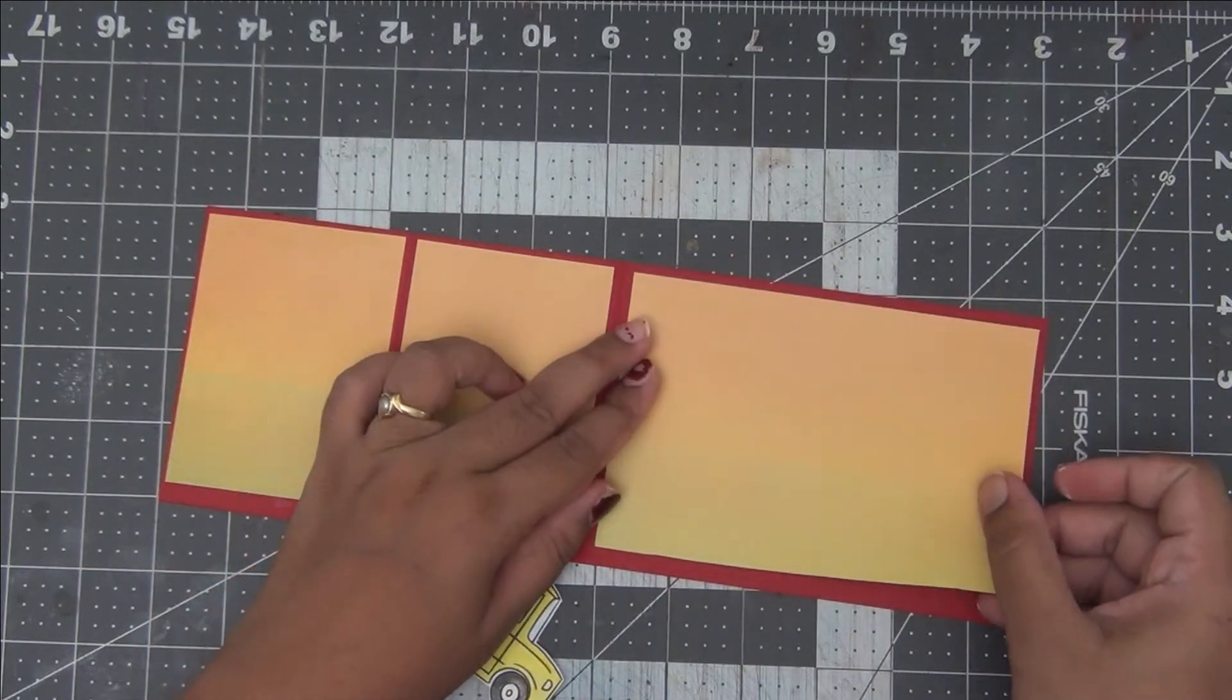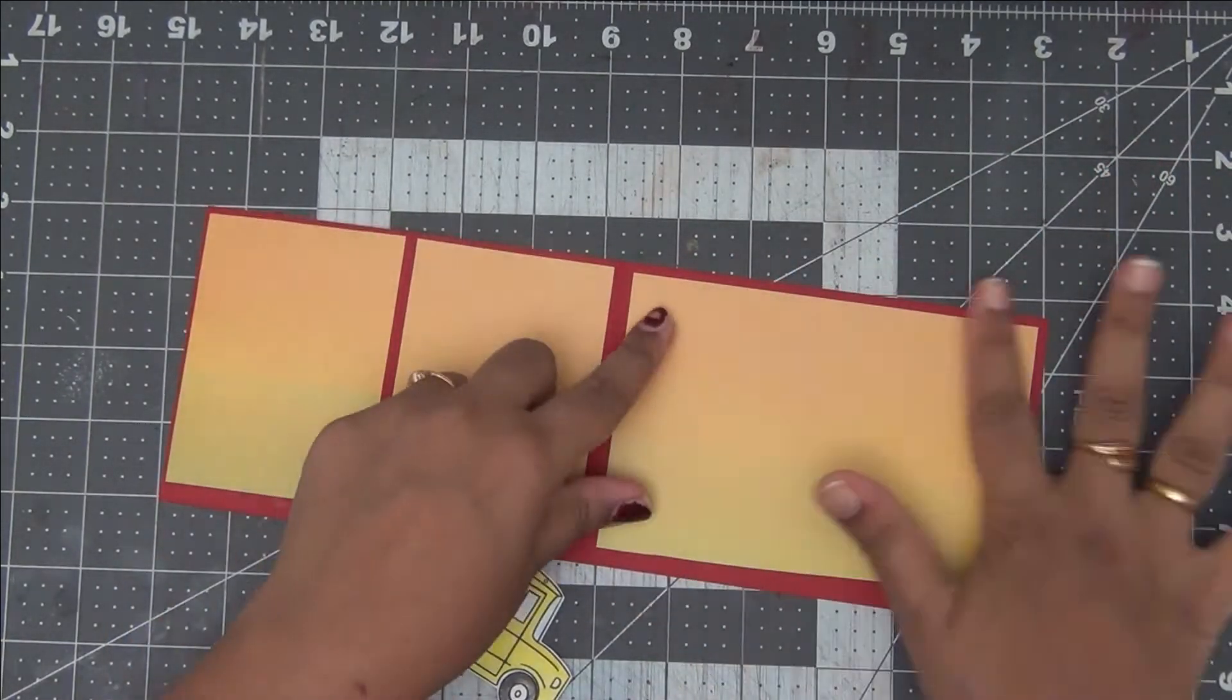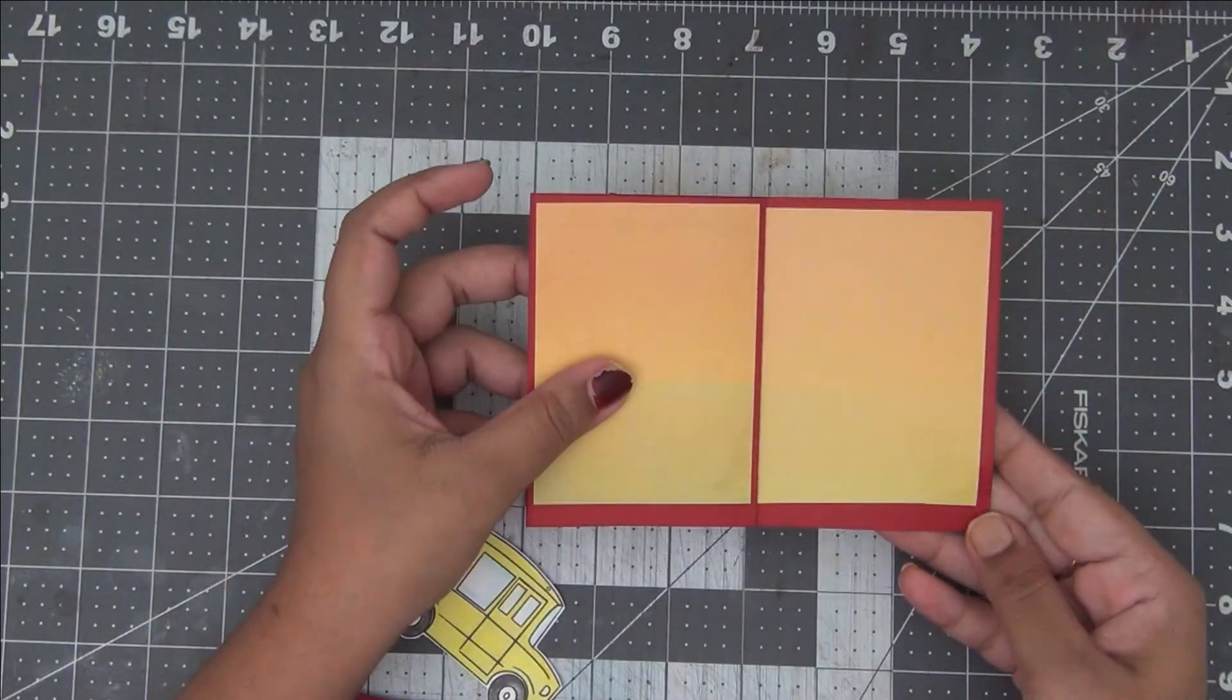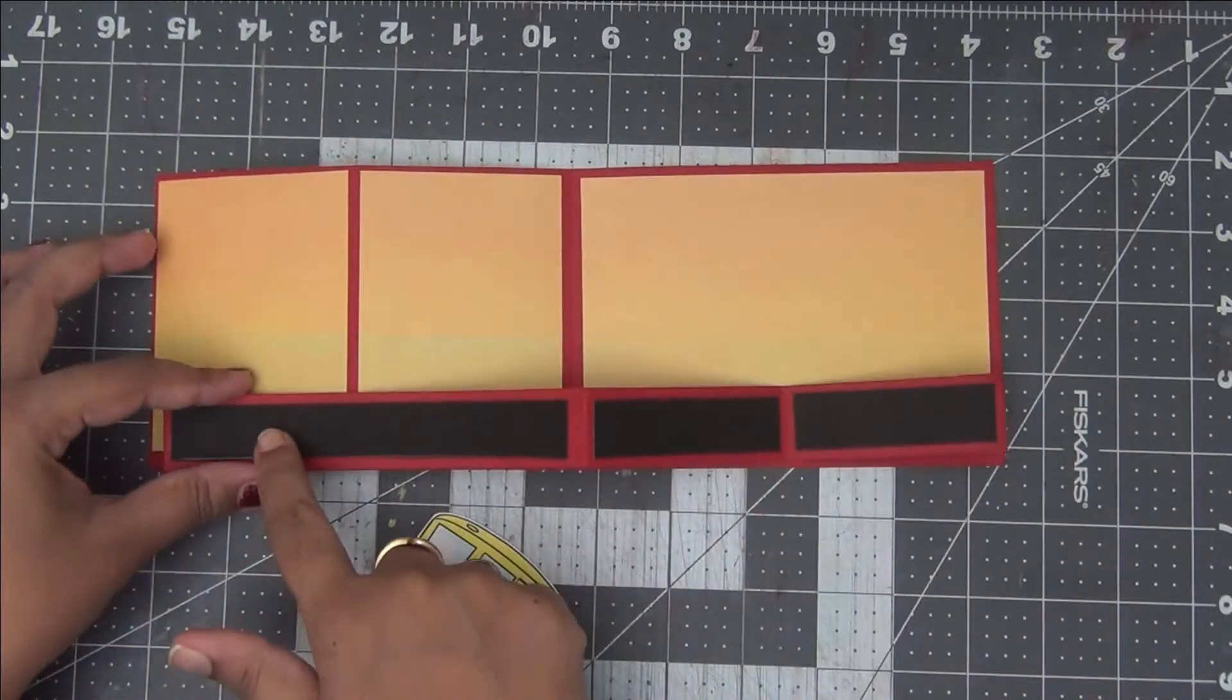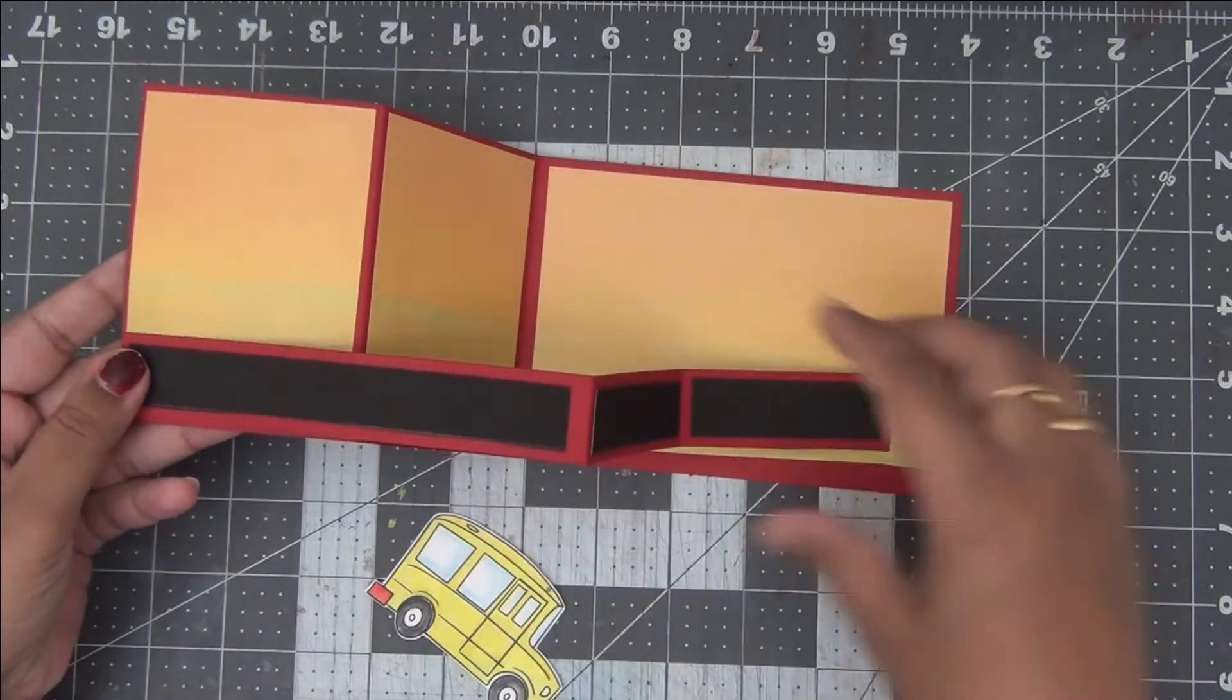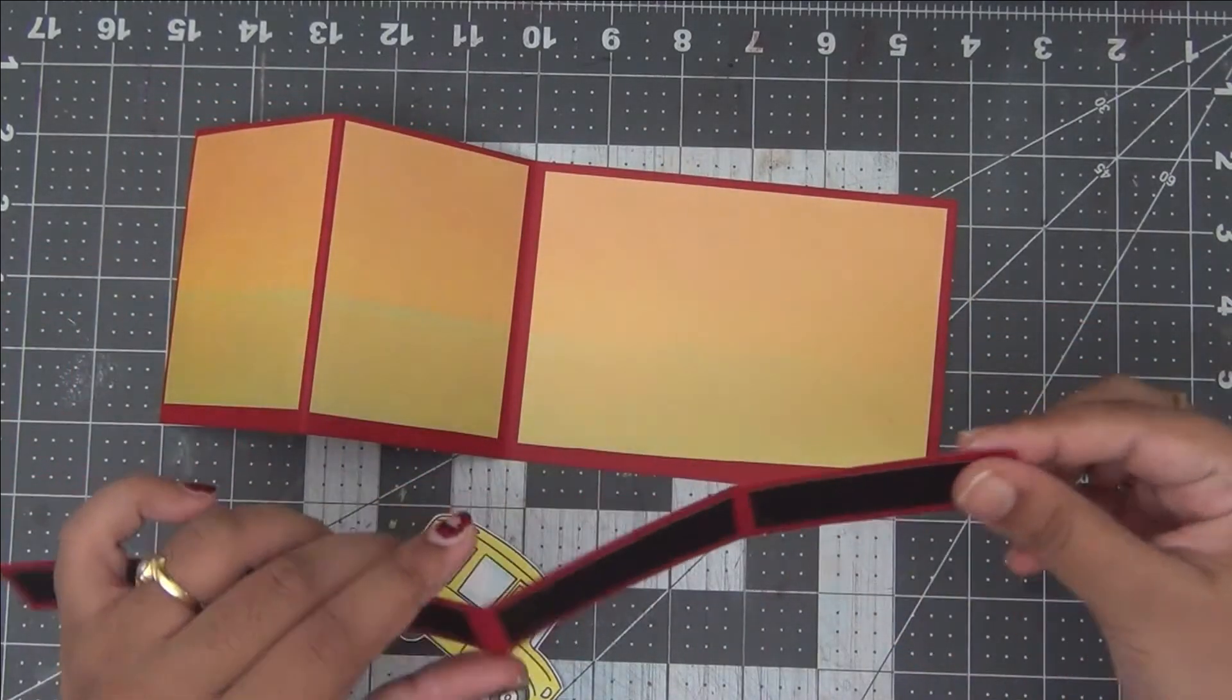This is a very easy card and you can make them in multiples in just no time, very easy to mass produce as well. So now I have added the pattern pieces on the base cardstock. Now I will be going ahead and sticking up this 1 inch strip of card that we have made.